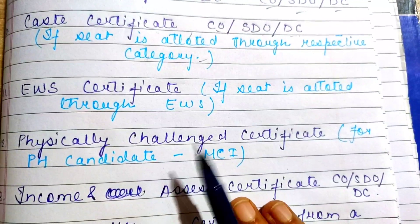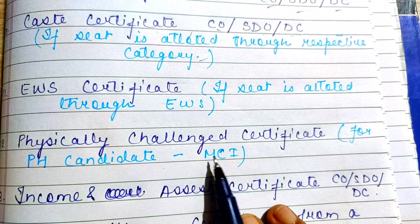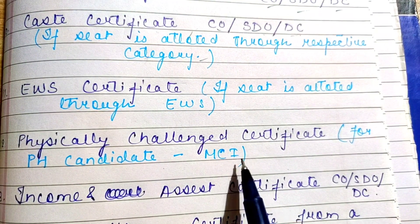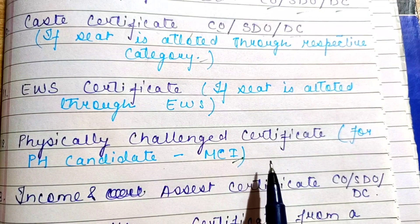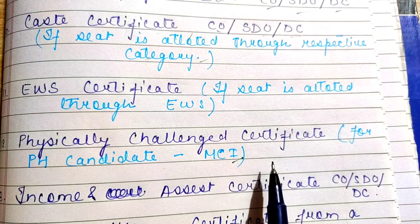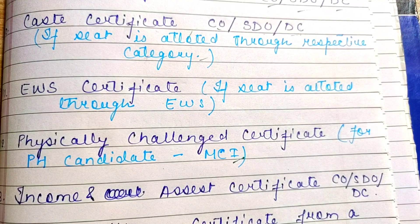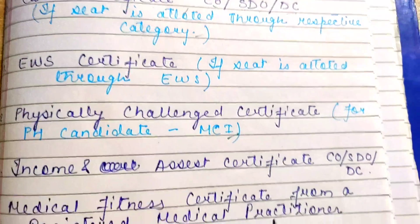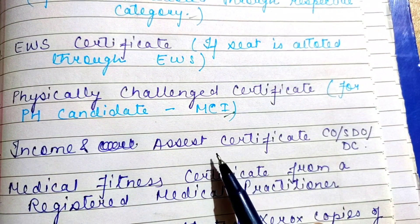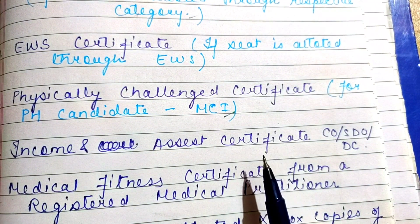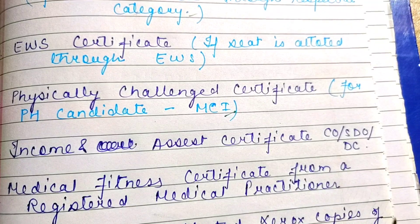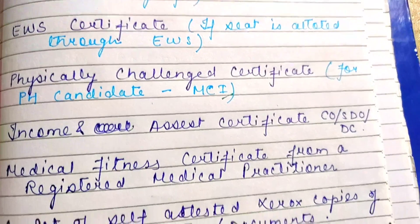Similarly, for Physically Challenged candidates, the certificate is required only if the seat is allotted under the PH category, as per MCI or NMC guidelines. For Income Certificate or EWS Certificate, it should be issued at CO, SDO, or DC level, and is required only if you have allotment in that category.